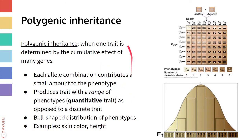Another situation we can have is called polygenic inheritance. This is when one trait is determined by the cumulative effect of a lot of different genes — each gene or allele combination contributes a little bit to the overall phenotype, and it's the additive combination of all of them that gives you your overall phenotype. When this happens, we usually see a bell-shaped distribution of phenotypes, because we have a range of phenotypes. For polygenic inheritance situations, the trait exists on a continuum — it's a quantitative trait — as opposed to a discrete trait where you just have different categories.